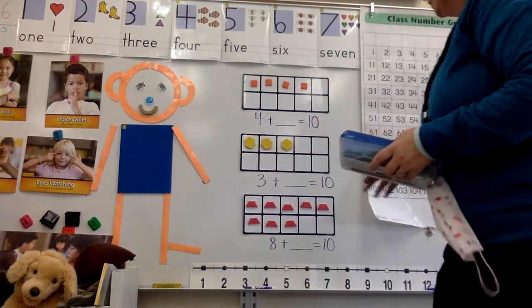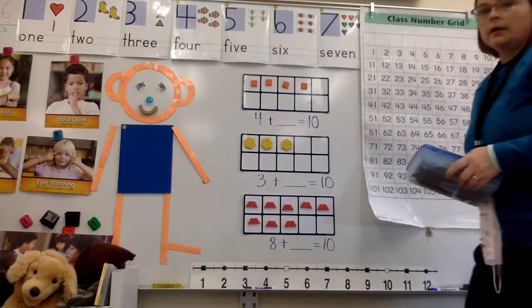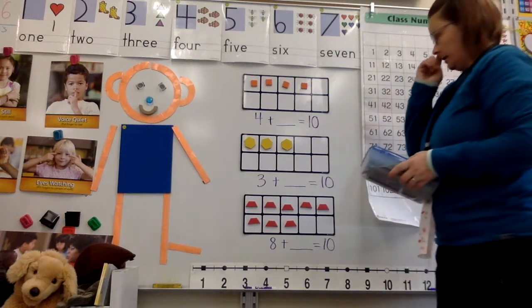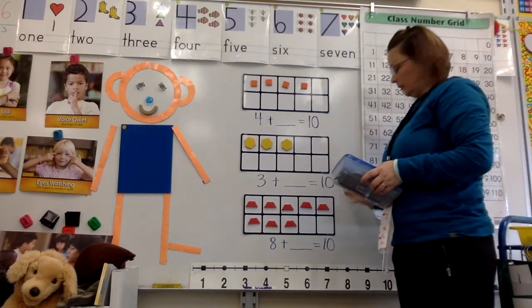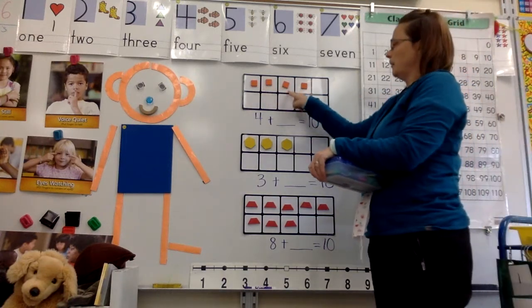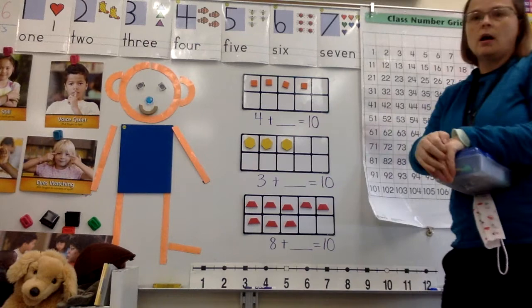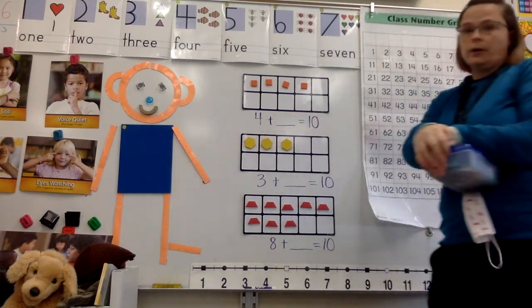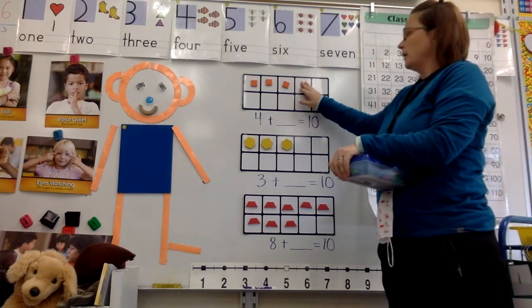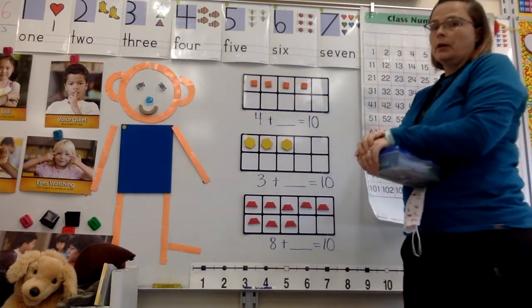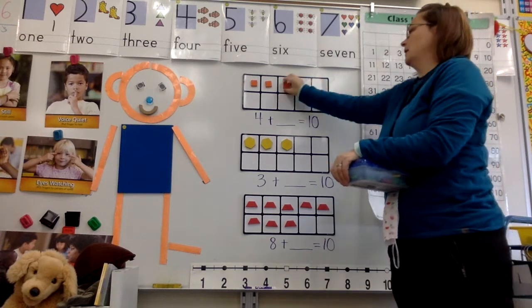So here I have some ten frames up here. We've been using the ten frames to make ten in two different ways. So here I have started an addition sentence for you and I have put the counters in place. So they're all in one group, so four is my first group. So I need to make sure if I'm gonna have four of something, they're all together on my ten frame, so not spread out all over the place.